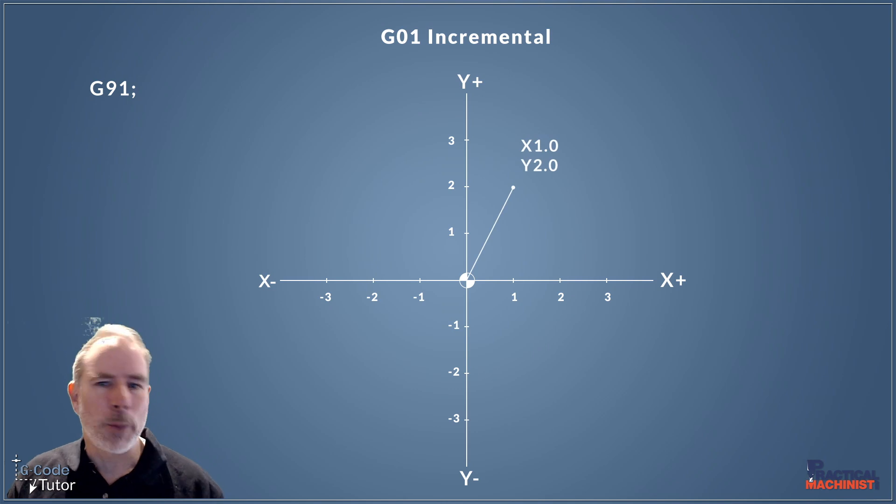So our first point, X1, Y2. So our code would look like this. So we're moving in G01 still. So X1, Y2 would take us to this position and we have to issue a feed rate because we're in G01 the same as before. So that point is exactly the same as in absolute because we're stemming from the origin position, the datum position.